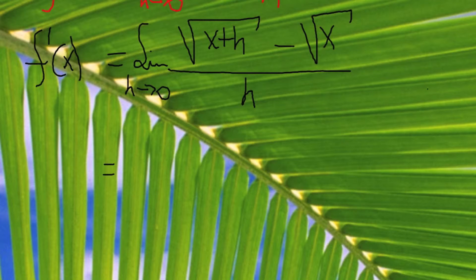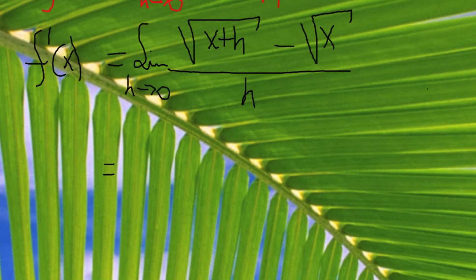As you can see, there's a problem evaluating this limit, because if I plug h equals 0 into the quantity square root of x plus h, I'm going to be left with square root of x minus square root of x, which is 0 divided by 0. Not possible to do.